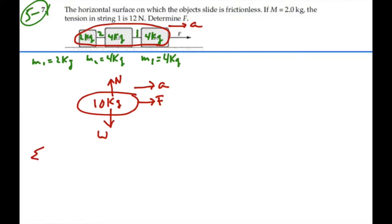So if I wrote Newton's second law in the x direction, I would have the summation of all the forces in the x direction would be equal to mass times acceleration, and that would equal the net force in the x direction. In this case, that's simply F, because the tensions are internal to this blob.